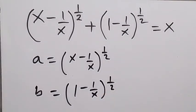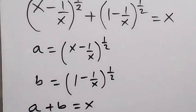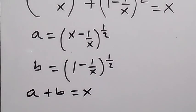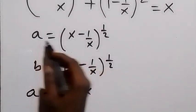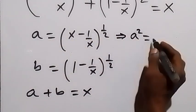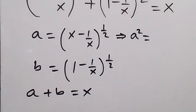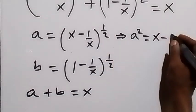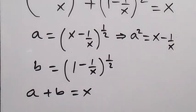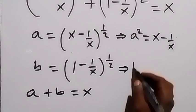Then we can rewrite the equation as a plus b equals x. From here we can square both sides: squaring a will cancel the power of half, giving us a squared equals x minus 1 over x. Similarly, squaring b gives us b squared equals 1 minus 1 over x, since the square cancels the power of half.